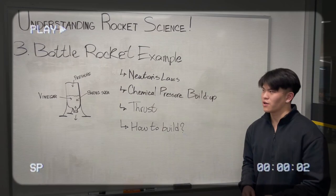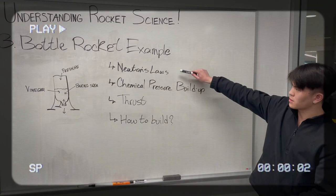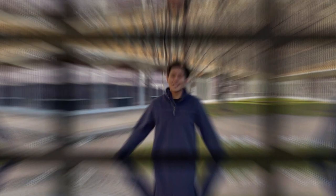So you guys know we're not rocket scientists. So today, we're going to use a bottle rocket example as our real-life demonstration. We're going to use all of the principles we learned in this video, such as Newton's laws, chemical pressure buildup, which leads into thrust that shoots the rocket up, and then how to build a rocket at home. It's not rocket science, guys.